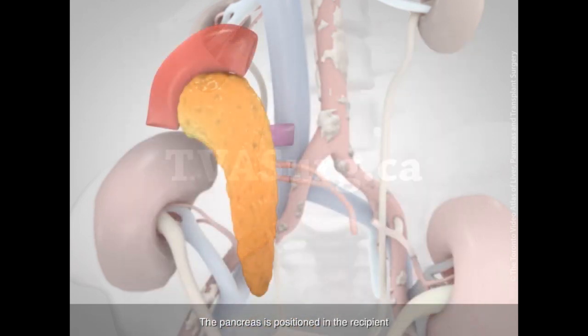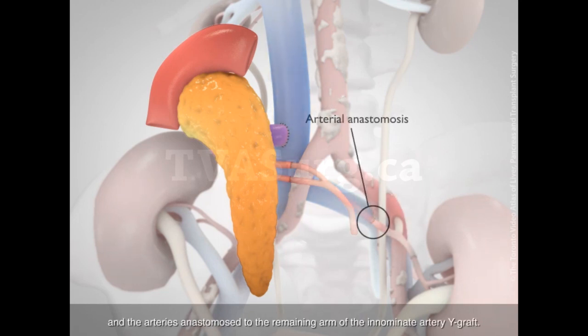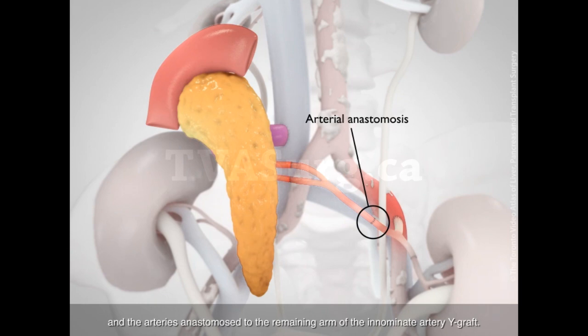The pancreas is positioned in the recipient, with the portal vein anastomosed to the vena cava, and the arteries anastomosed to the remaining arm of the innominate artery Y-graft.